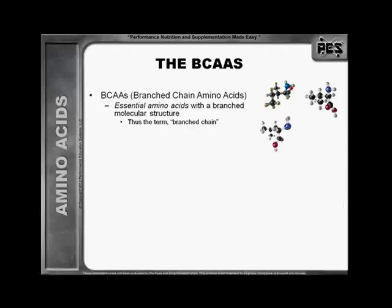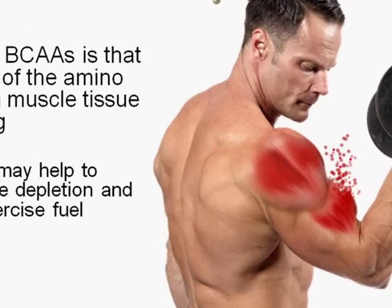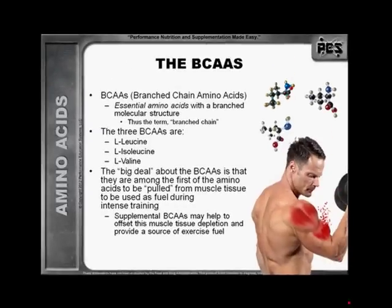The branched chain amino acids are essential amino acids with a branched molecular structure, thus the term branched chain. The three BCAAs are L-leucine, L-isoleucine, and L-valine. The BCAAs are among the first of the amino acids to be pulled from muscle tissue to be used as fuel during intense training. Supplemental BCAAs may help to offset this muscle tissue depletion and provide a source of exercise fuel.